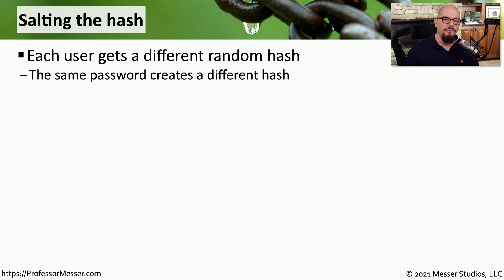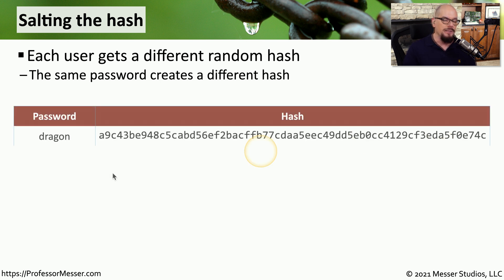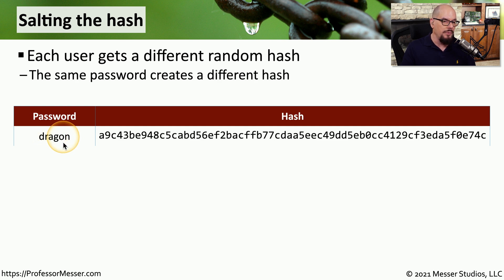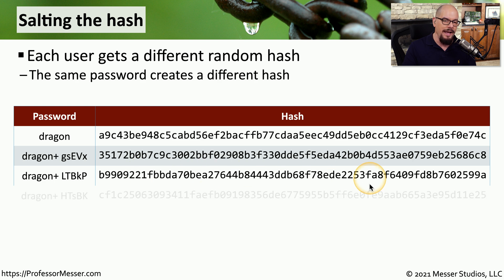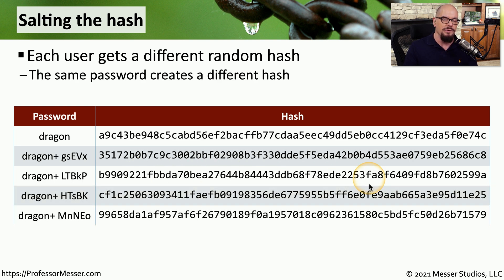Let's take a scenario where everyone is using exactly the same password, but we're going to store that password information along with a salted hash. We'll use the password 'dragon' — the hash for dragon looks like this. Even though everyone is using the password 'dragon', for each account we add an extra piece of salt, which gives us a different hash in every single scenario. So if an attacker got a copy of our hash file, they would see what they thought were five different passwords. In reality, it's the same password with different salt added for randomization.